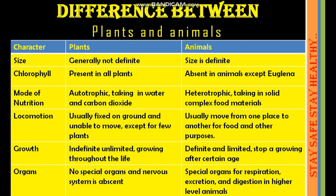I have also attached the differences between plants and animals based on their characteristics. Size: plants are generally not definite; animal size is definite. Chlorophyll: present in all plants, absent in animals. Mode of nutrition: plants are autotrophic, taking in water and carbon dioxide; animals are heterotrophic, taking in solid complex food materials. Locomotion: plants usually sit on the ground and are unable to move except for a few; animals usually move from one place to another for food and other purposes.